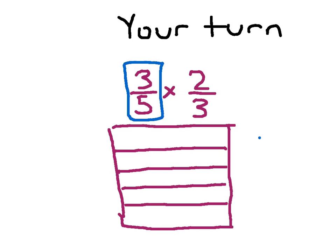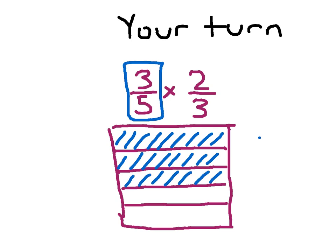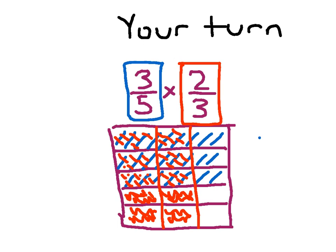For 3 fifths in blue, the model is already divided into 5 parts — we just look at 3 of those 5 parts. For 2 thirds in red, we divide the area model into 3 parts vertically. We shade in 2 of those 3 parts. The product of 3 fifths and 2 thirds is the parts shaded by both colors: 1, 2, 3, 4, 5, 6 — so 6 in the numerator. The denominator is 15 — you can count all parts, or notice it's a 3 by 5 grid, and 3 times 5 is 15.